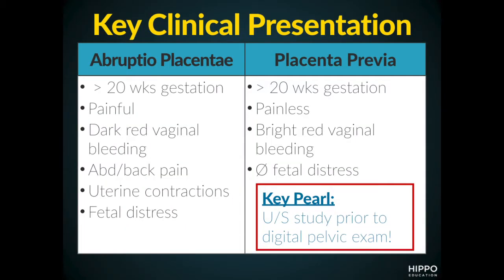Let's take a look at this slide. This shows us the clinical characteristics that really define and separate these two conditions. When we compare abruptural placenta versus placenta previa, the item that they share in common is that they occur after 20 weeks of gestation. That's where the similarities stop.